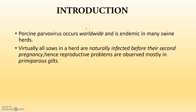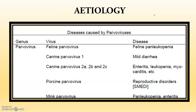The porcine parvo occurs worldwide and is endemic in many swine herds. The main problem is the reproductive problem in case of parvo. The etiological agent is the porcine parvovirus, mainly producing reproductive disorders — SMEDI.